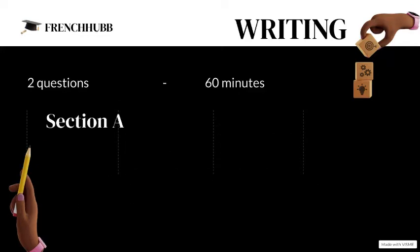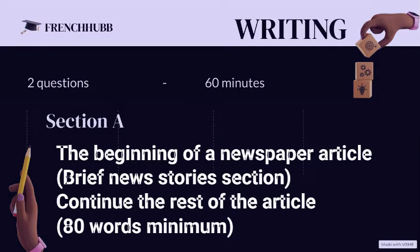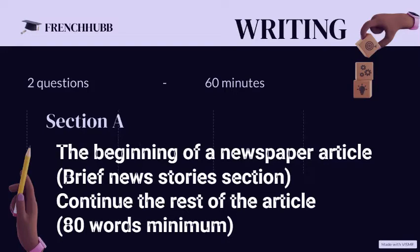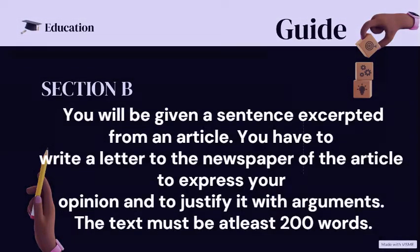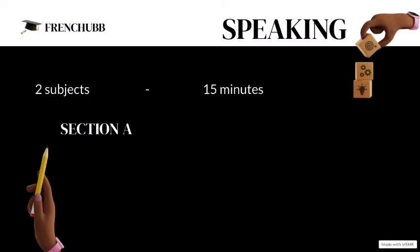The writing section consists of two questions and the time duration for completing the questions is 60 minutes. In section A, the beginning of a newspaper article will be given and you have to continue the rest of the article. In section B, you will be given a sentence excerpted from an article; you have to write a letter to the newspaper to express your opinion and justify it with arguments. The text must be at least 200 words. The link of the sample paper is given in the description.